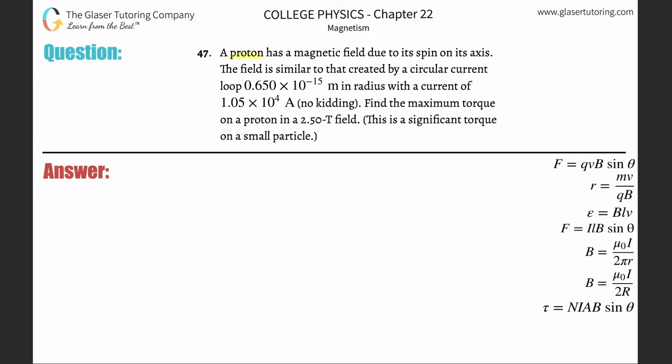Number 47: A proton has a magnetic field due to its spin on its axis. The field is similar to that created by a circular current loop 0.65 × 10^-15 meters in radius with a current of 1.05 × 10^4 amps. No kidding. Find the maximum torque on a proton in a 2.5 Tesla field.